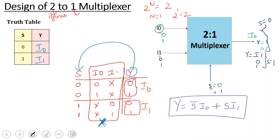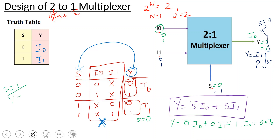Let's verify: when S is equal to 0, Y equals S-bar times I0 plus S times I1. So 0-bar is 1, times I0, plus 0 times anything is 0. Final answer is I0 — so S=0 gives output I0. When S is equal to 1, 1-bar is 0, so 0 times I0 is 0, and 1 times I1 is I1. So Y equals I1.